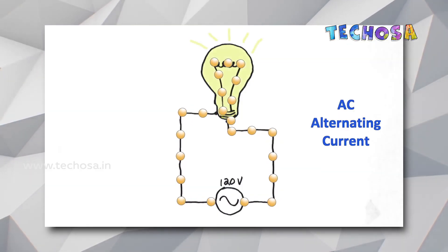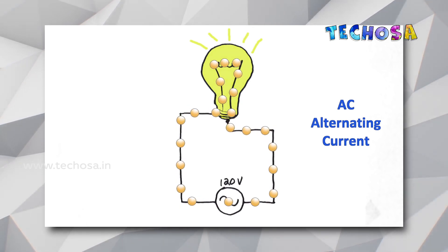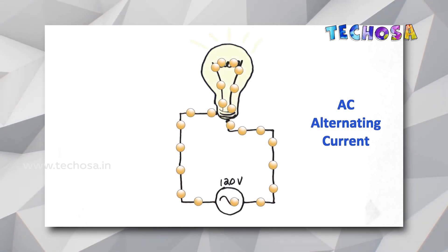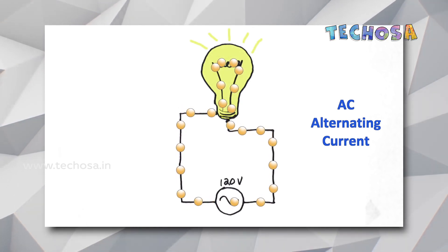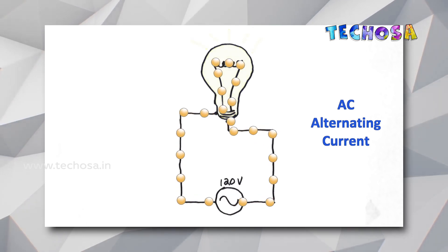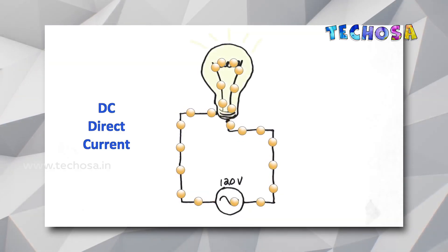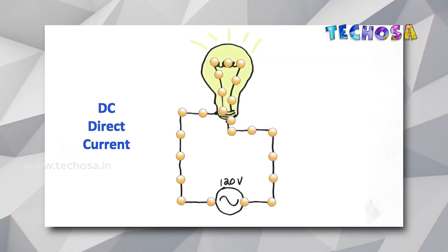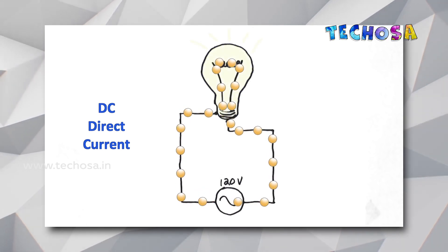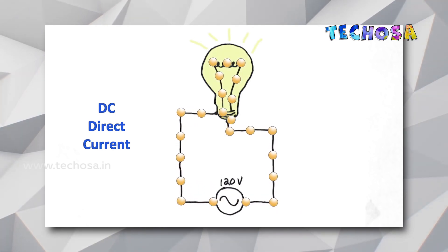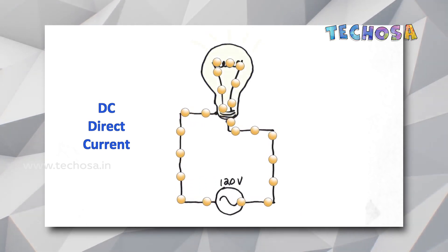In alternating current, the electrons do not flow in a continuous loop. Instead, it will alternate backwards and forwards just like tides in the sea. Electronic devices like laptops and smartphones run on direct current. In this kind, electrons flow in only one direction, just like the flow of water in a river.